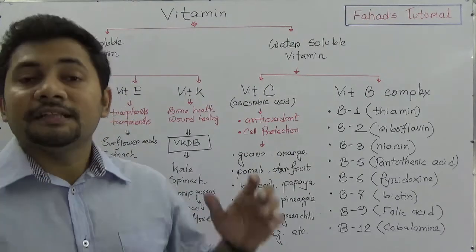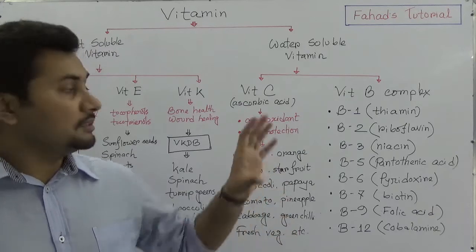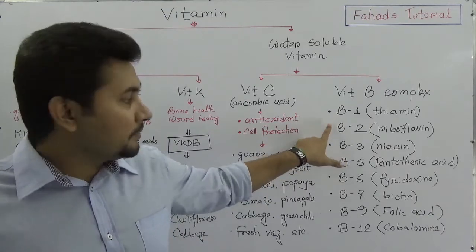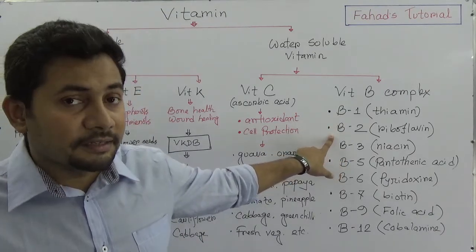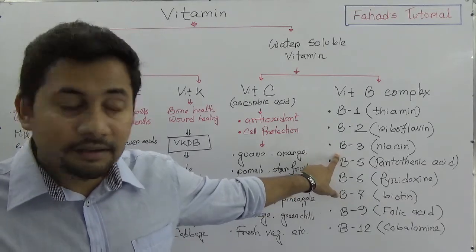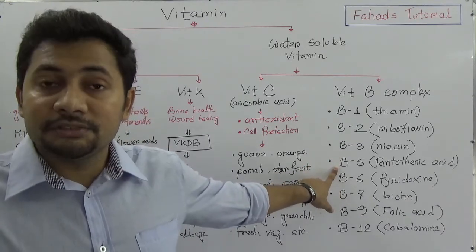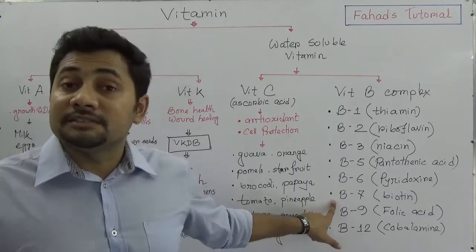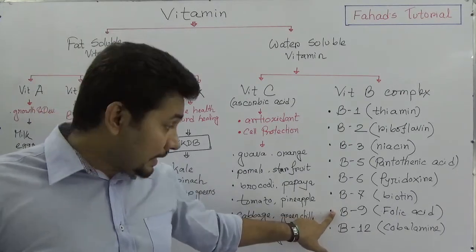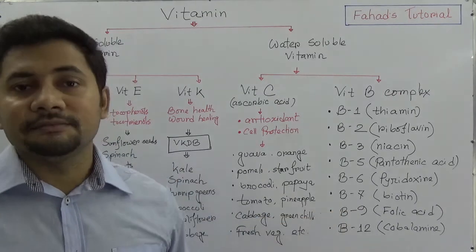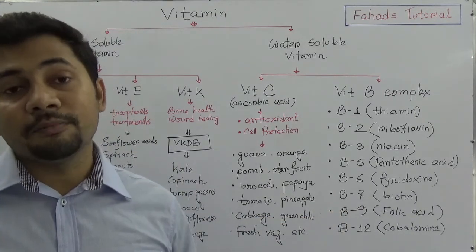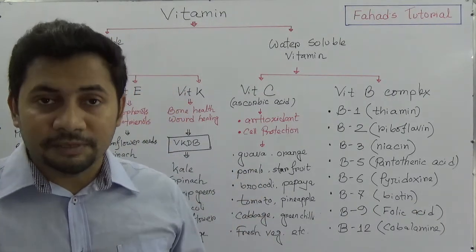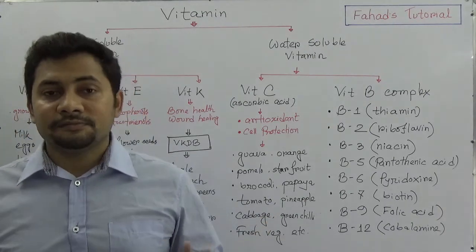Vitamin B complex includes eight types of vitamin B: vitamin B1, known as thiamine; vitamin B2, known as riboflavin; vitamin B3, known as niacin; vitamin B5, known as pantothenic acid; vitamin B6, known as pyridoxine; vitamin B7, known as biotin; vitamin B9, known as folic acid; and vitamin B12, known as cyanocobalamin or cobalamin.